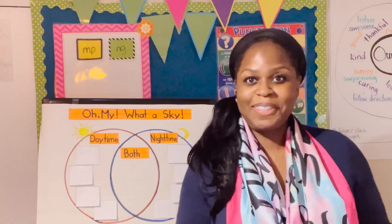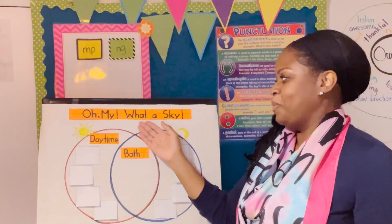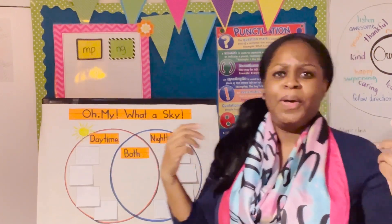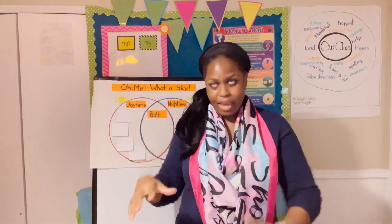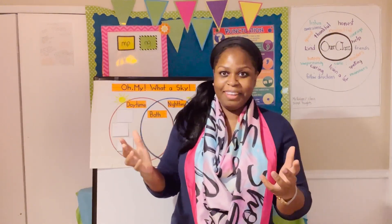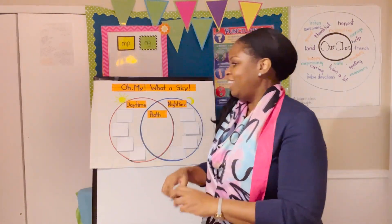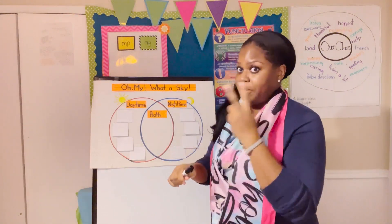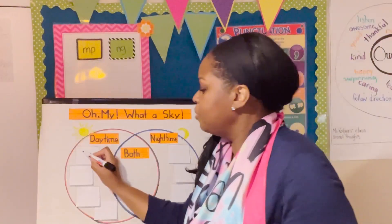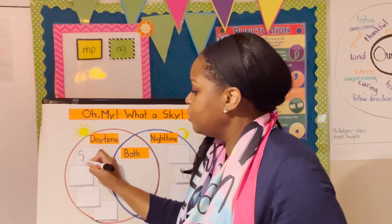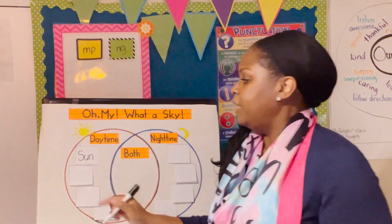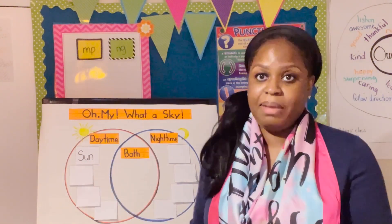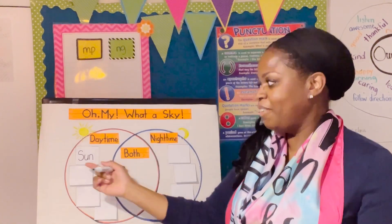So let's get started. What would you see in the daytime sky? Something that's really obvious — it's shining very brightly. Yes, the sun! We could see the sun in the daytime sky. Just make sure you're not looking directly at it or it can damage your eyes. I'm going to write the word Sun with an uppercase S, because it's the name of our closest star, so it should have an uppercase letter.